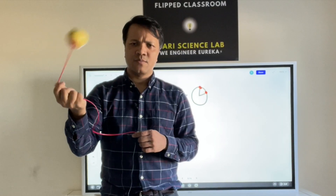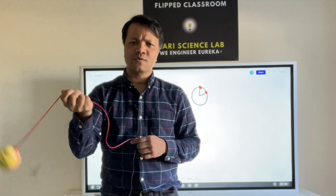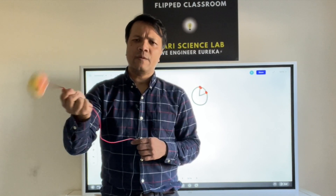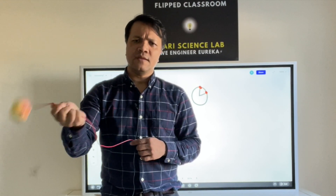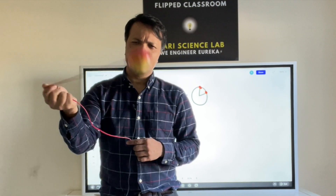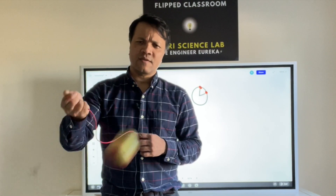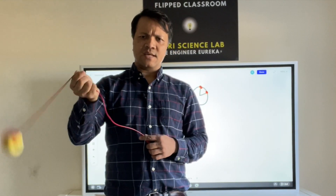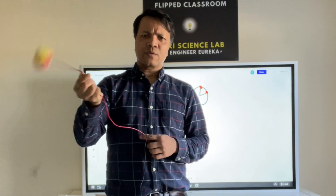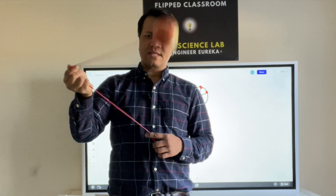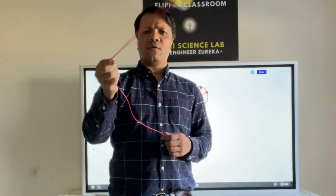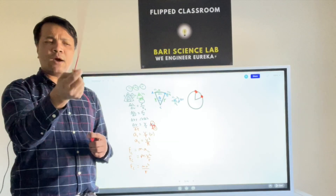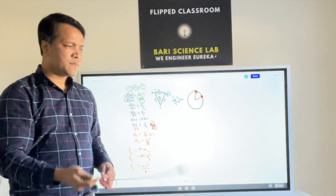What causes the circular motion? The centripetal force coming from my hand causes the centripetal acceleration. The centripetal acceleration on the moon due to earth is very small — less than one. Now, if the rope breaks, which direction does the apple go? Some people think it goes outward because they think the apple experiences centrifugal force, but that's not true. If the rope breaks, the apple moves with constant velocity in a straight line.